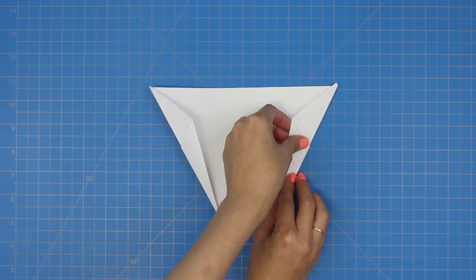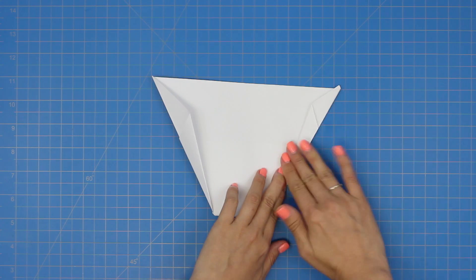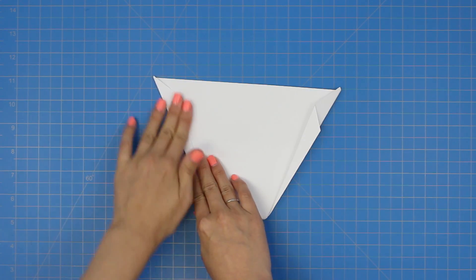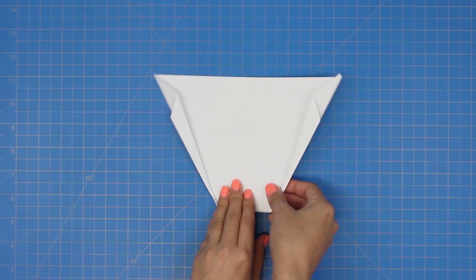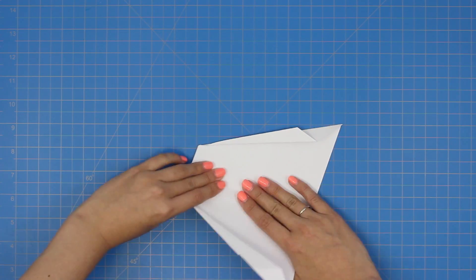Now take the inner edge and fold it back along the outer edge. Spin the plane around and fold it in half.